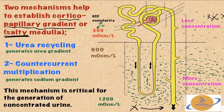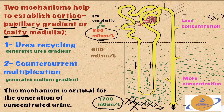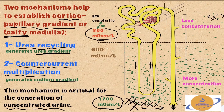There are two mechanisms that help establish what's called the corticopapillary osmotic gradient, or salty medulla. Corticopapillary refers to the concentration difference in osmolarity between the outer cortex and the inner medulla near the renal papilla. All the way up in the cortex the osmolarity is much less — let's say 300 — and all the way down in the medulla there is more and more osmolarity — let's say 1,200.